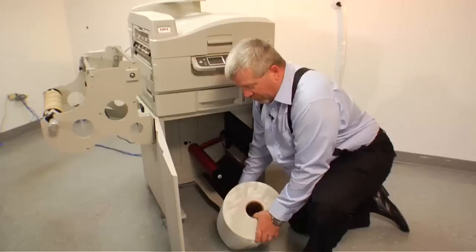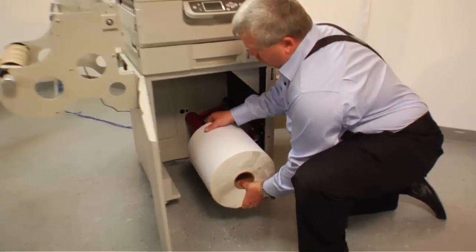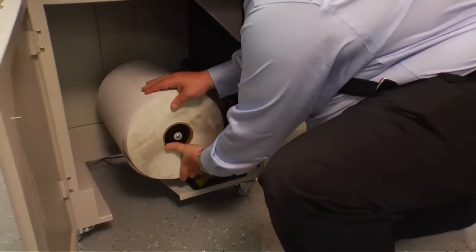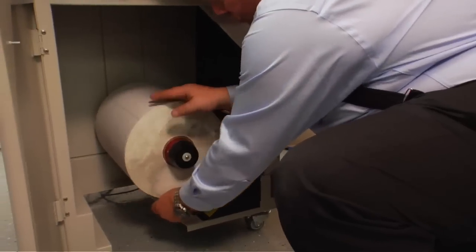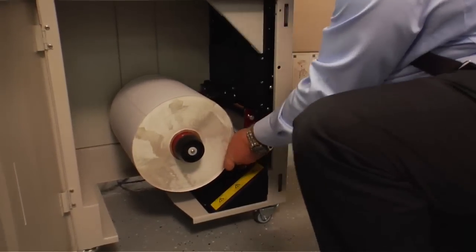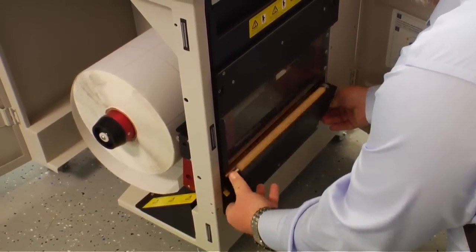Loading media is as simple as this. We have our media on a three inch core. It slides onto the machine. We're going to back it up all the way to the rear guide. There are two yellow tabs that we're going to press down. That opens up the door.